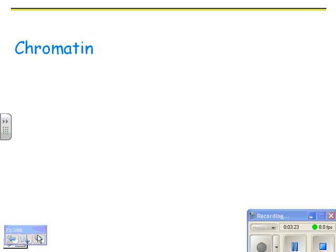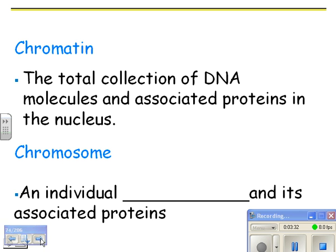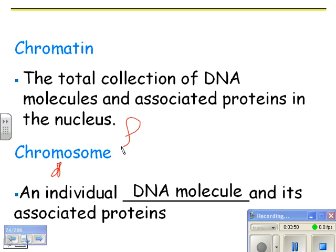Chromatin is defined as the total collection of DNA molecules and associated proteins in the nucleus, whereas a chromosome is an individual DNA molecule and its associated proteins. These two vocabulary words can be a little confusing. In the old days we said spread-out DNA was chromatin and condensed DNA was a chromosome — but that's not true anymore. Now we call chromatin all of the DNA molecules whether they're spread out or condensed, and a chromosome is one molecule of DNA regardless of its state.